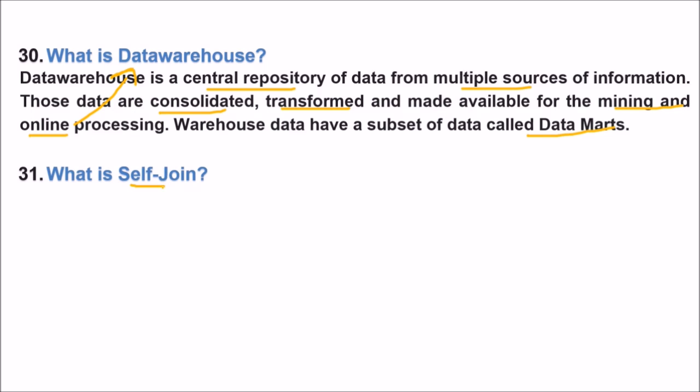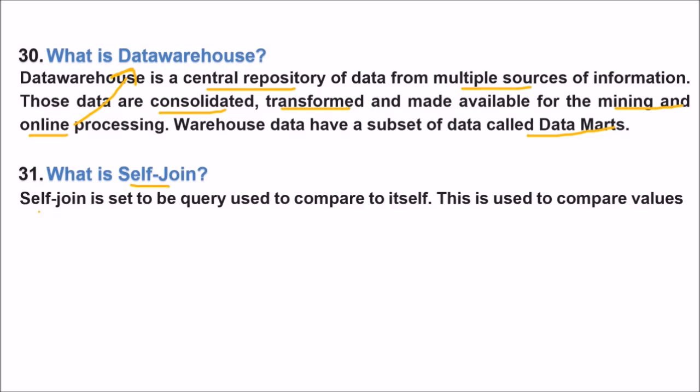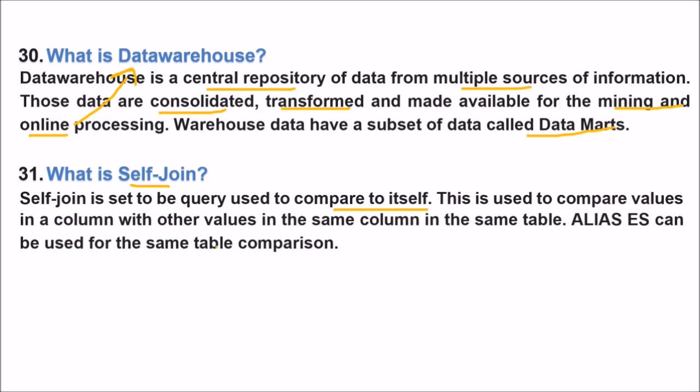What is self-join? Self-join is said to be a query which is used to compare to itself. We use self-join to compare values in a column with other values in the same column in the same table.